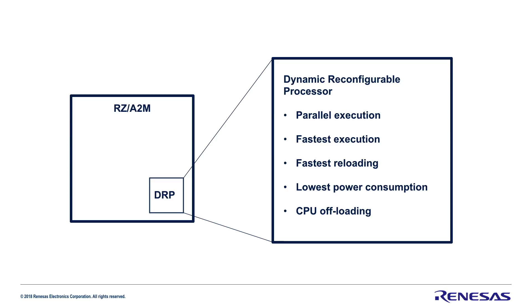What can you do with the DRP? The DRP is great for image processing and pre-processing because it allows parallel execution by multiple tiles, similar to what happens in a GPU. And as the DRP is programmable hardware, the execution is extremely fast and can be 10 times faster than software running on the CPU.